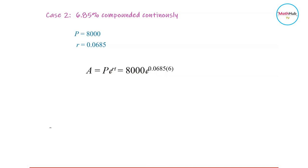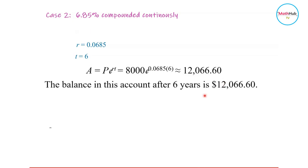0.0685—that is the decimal form of 6.85%—times 6. This is approximately equal to $12,066.60. This is the balance in the account after 6 years.